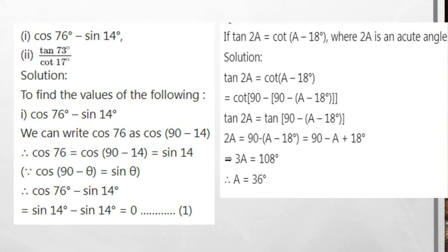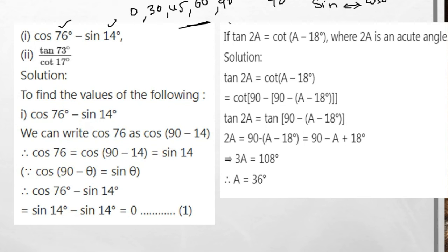This is the complementary angle concept. Standard angles are 0°, 30°, 45°, 60°, 90°. In complementary angles (summing to 90°): sin changes to cos and cos changes to sin; sec changes to cosec and cosec changes to sec; tan changes to cot and cot changes to tan.